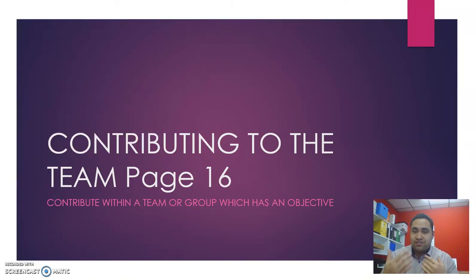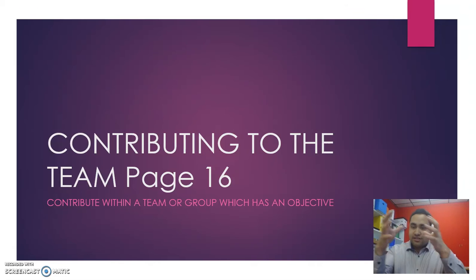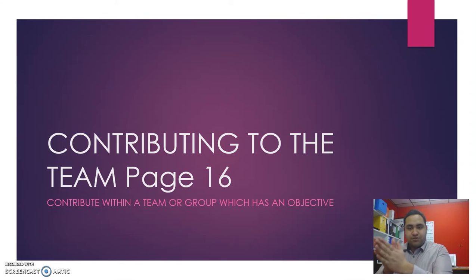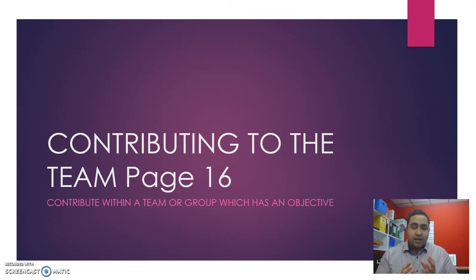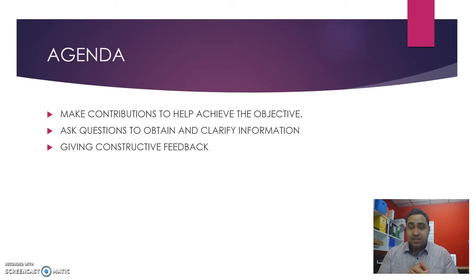In this section we're going to look at contributing to the team. The first section we looked at covered how to form your team, the rules to put in place, and who's responsible for what. Now we're looking at how you as a group member have contributed to the team. The aspects we'll cover are: making contributions to help achieve the objective, asking questions to obtain and clarify information, and giving constructive feedback.